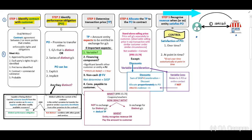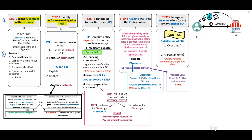A performance obligation is the promise by the entity to deliver distinct goods or services — noted as 'D·GS' (distinct goods and services). Step two is to identify the performance obligation — the promise by the entity to deliver goods or services to the customer. Step three is to determine the transaction price, which is the consideration paid by the customer to the entity.